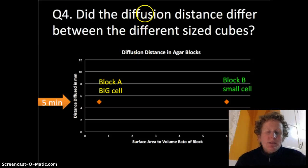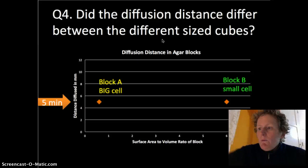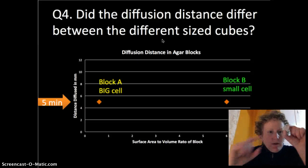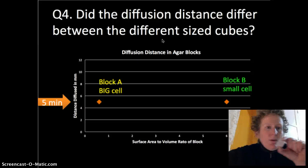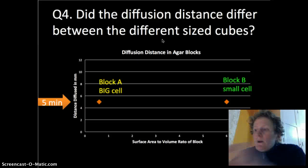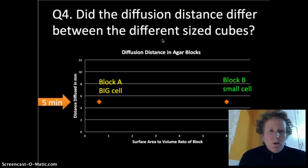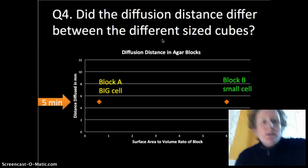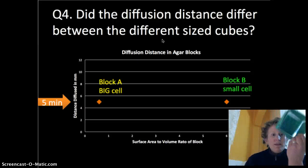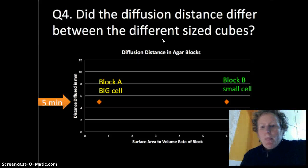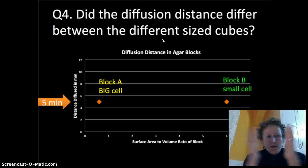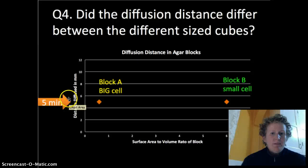Did the diffusion distance differ between the different size cubes? Well, for the 2 centimeter cube and the 1 centimeter cube, no. And what we'll probably find out is that the really big cube, the one that's currently soaking in vinegar that's this big, is only going to diffuse 5 millimeters as well in 5 minutes.